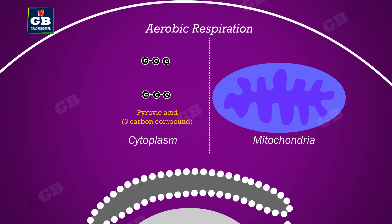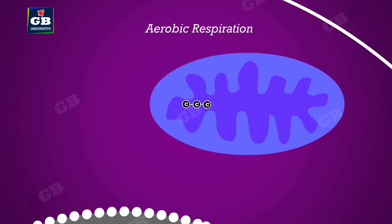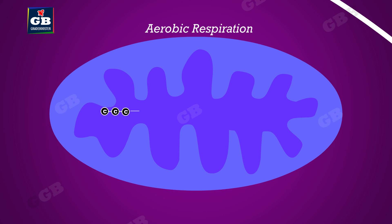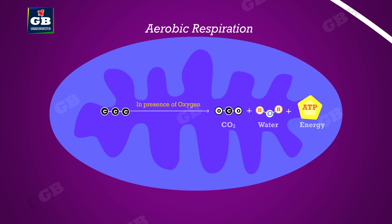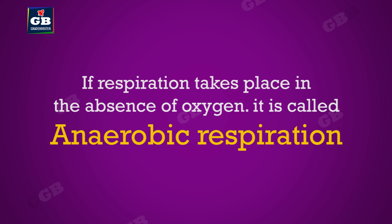These pyruvic acid molecules enter the mitochondria and turn into carbon dioxide and water, releasing energy in the form of ATP. ATP fuels the different endothermic reactions that take place inside the cells.